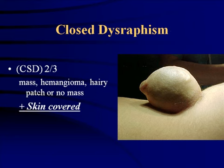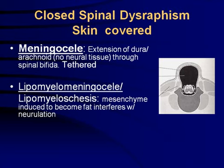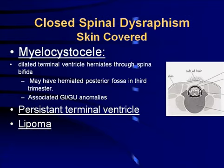With closed dysraphism, you have a skin-covered mass that may have discoloration or a hairy patch associated with it. These can be separated into meningoceles — skin covered, typically associated with a tethered cord but not associated with a Chiari malformation — and lipomyelomeningocele, which is also skin covered, typically with a mass, and not associated with a Chiari malformation. Myelocystocele is a dilated terminal ventricle that herniates through a spinal defect, typically in the third trimester, and may have some posterior fossa herniation as well. Lipomas and persistent terminal ventricles are also closed spinal dysraphisms that are skin covered.